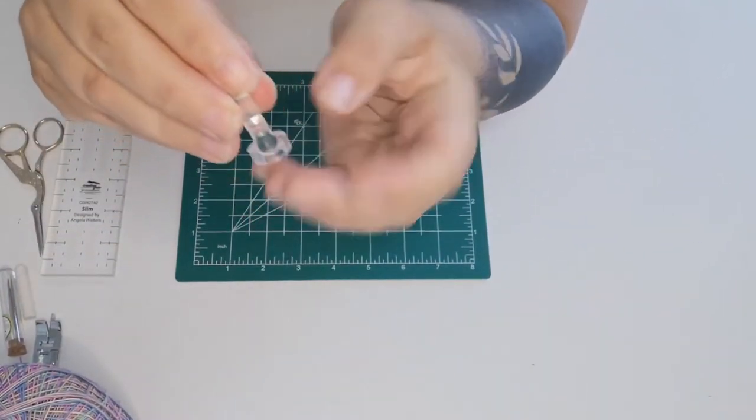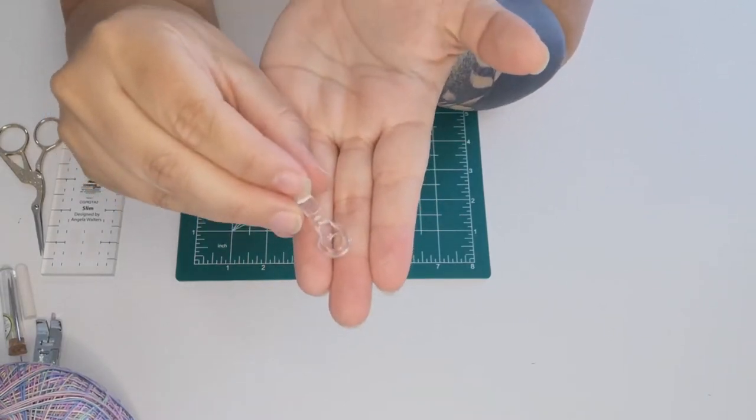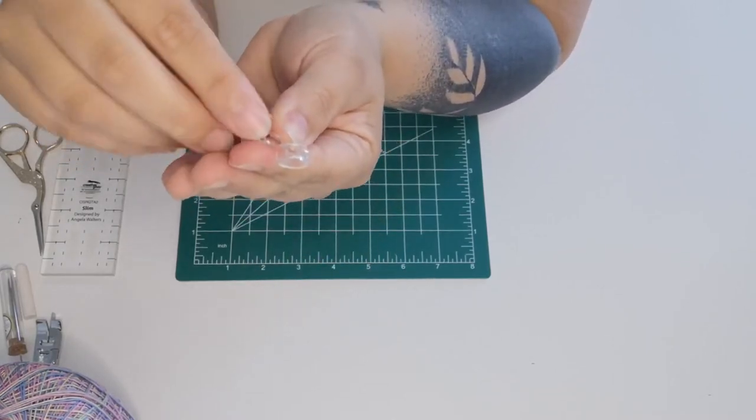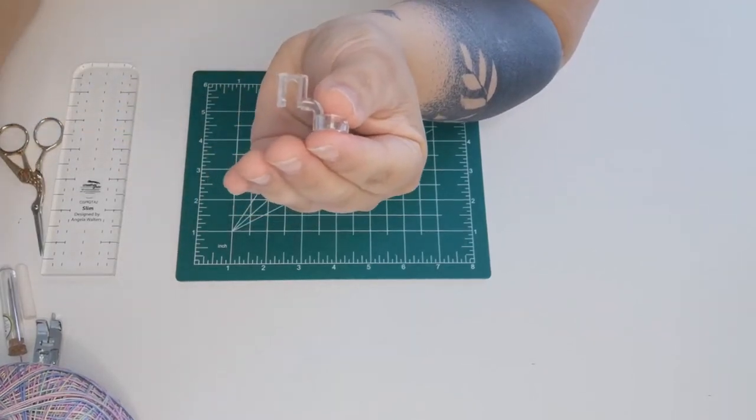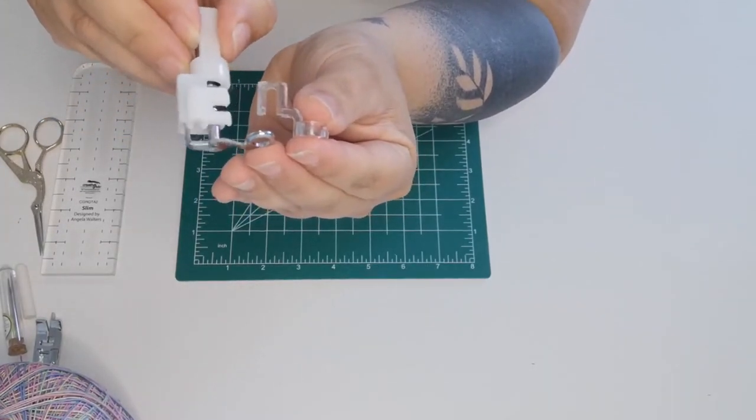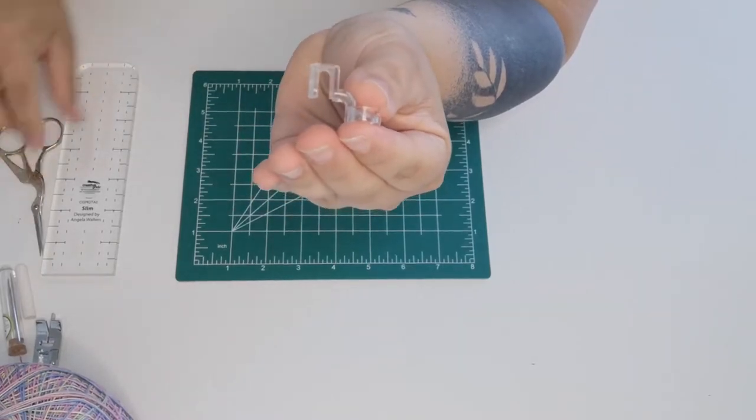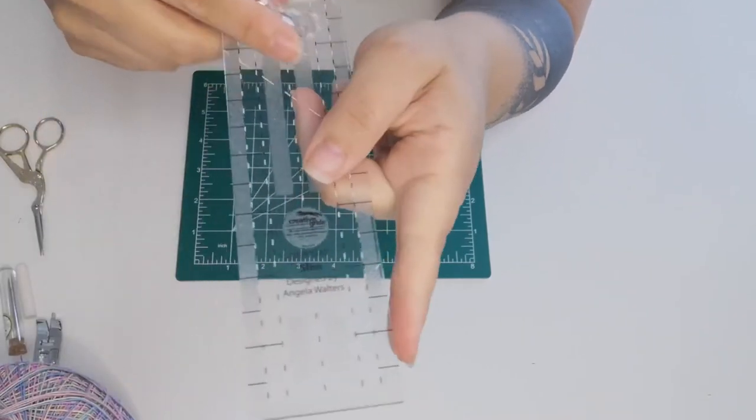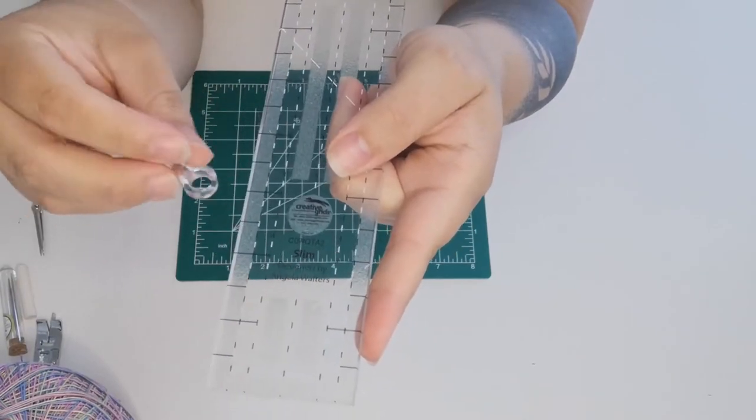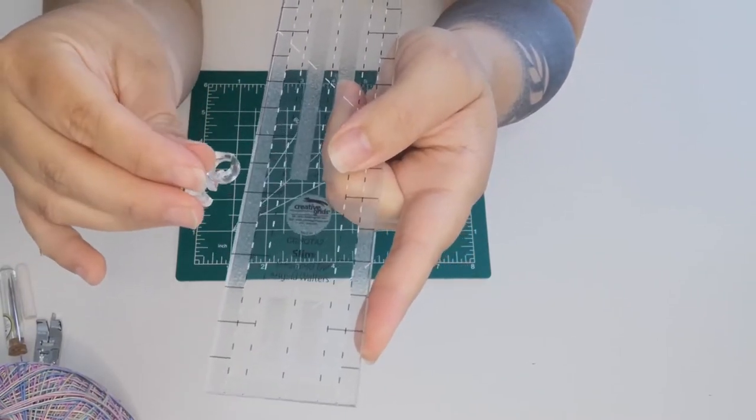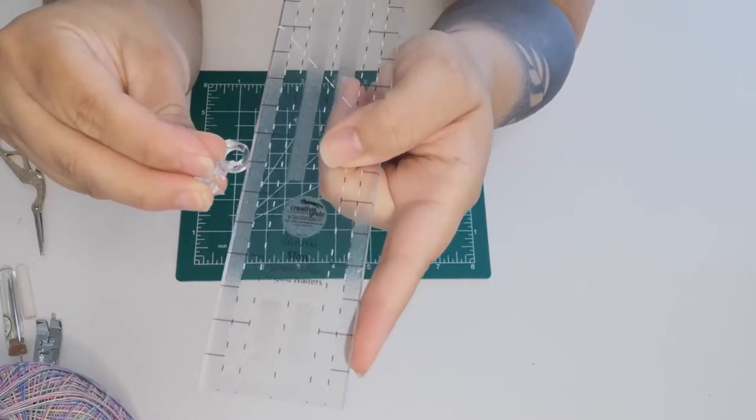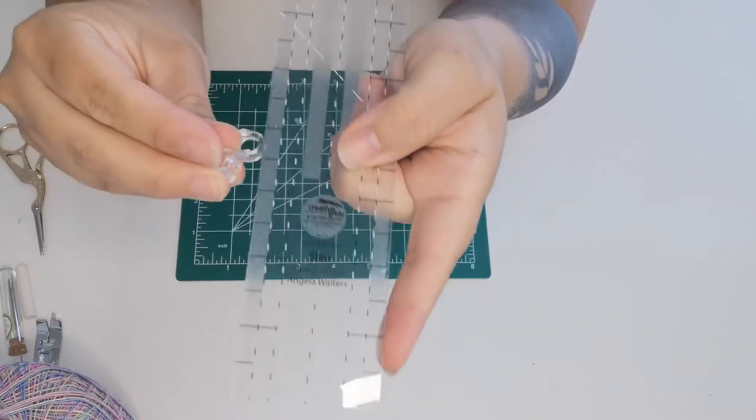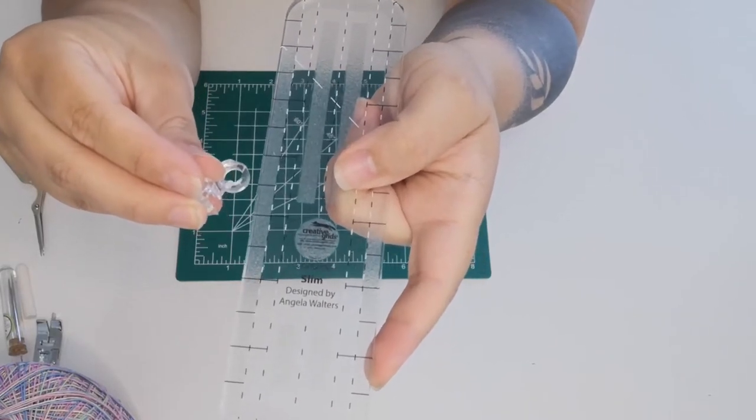The next foot that I want to show you is a ruler foot. Kind of looks like that free motion foot, that darning foot. The difference is this right here - see how thick that is compared to an actual darning foot? The reason that it's thicker is because then you get to use a ruler to do ruler work. So to do this, this would be on your machine, you would drop your feed dogs, so it's the same as free motion quilting. But you slide your ruler along with the quilt.